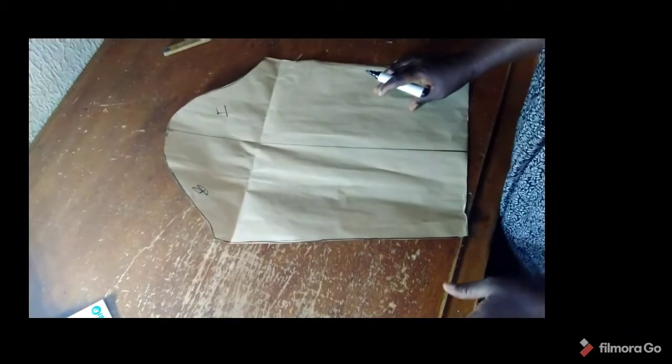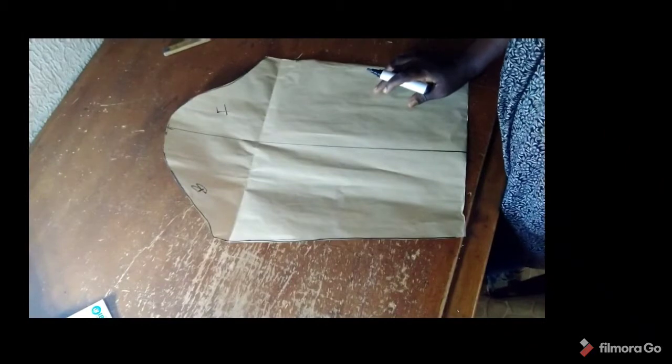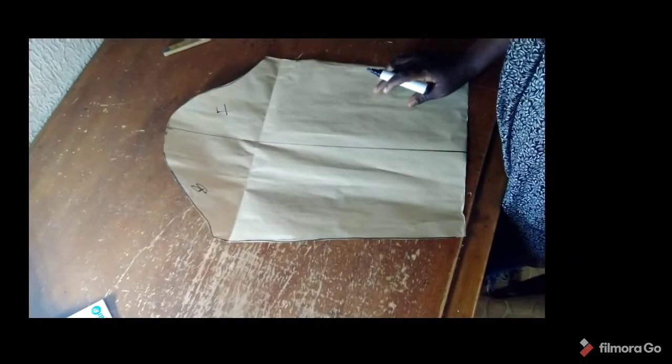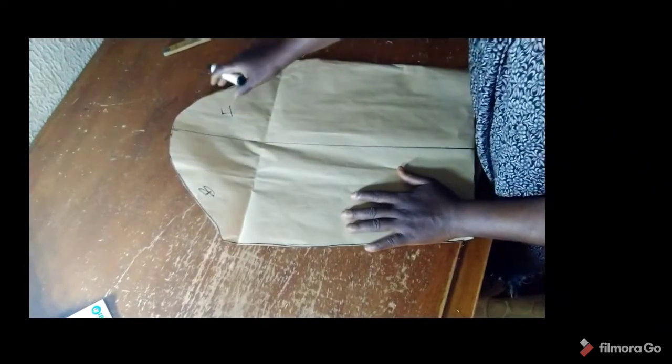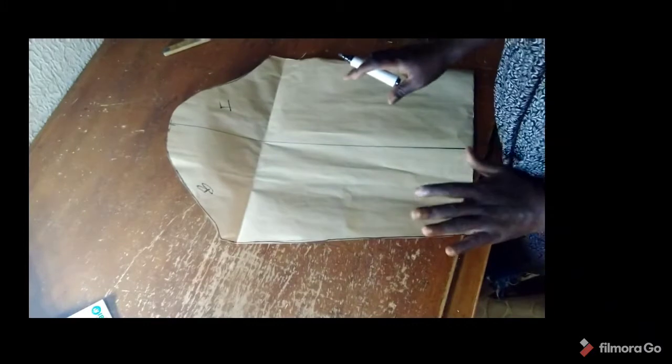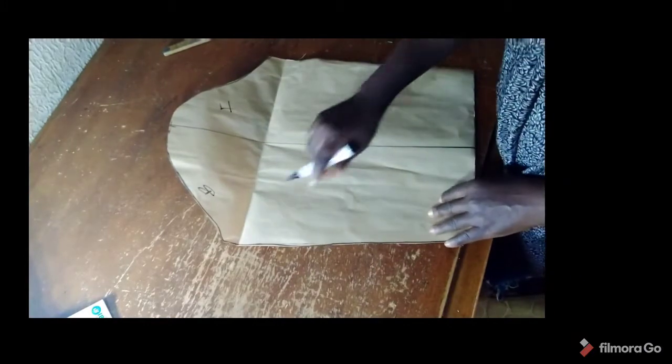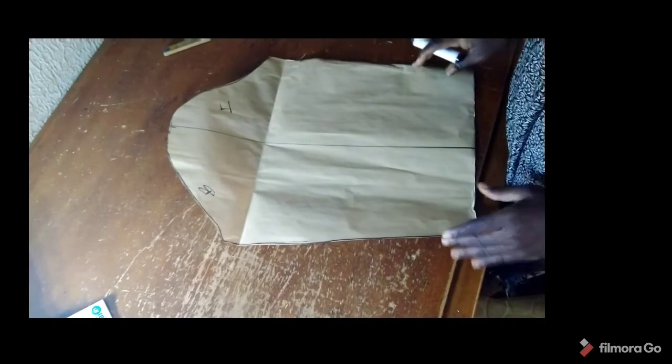Like I already said, the bell sleeve can also be called a bishop sleeve. This is a long sleeve fitted around the arm or shoulder and upper arm and flares out to the wrist.